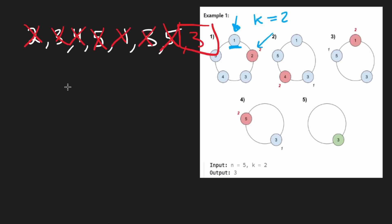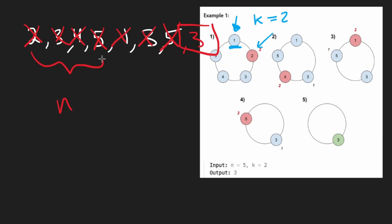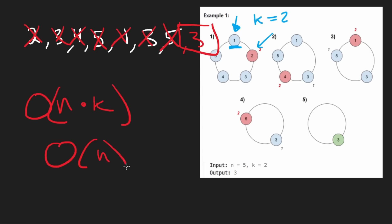This way we can solve the problem slightly more efficiently, but it's not going to be linear time. We do N iterations to eliminate all elements, and every time we eliminate an element we still pop K times. So the time complexity is O(N × K), and space complexity is still O(N).